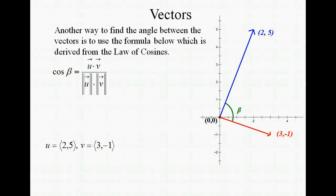Let's go ahead and find the dot product of the two vectors. So we're going to multiply our x-coordinates together and our y-coordinates together, and then add those. And we get 1 for this problem.